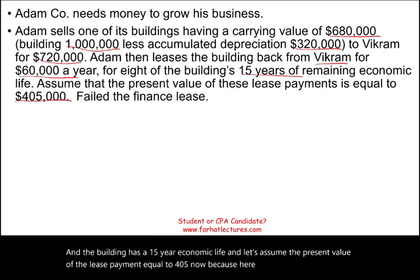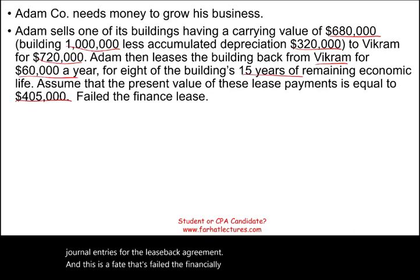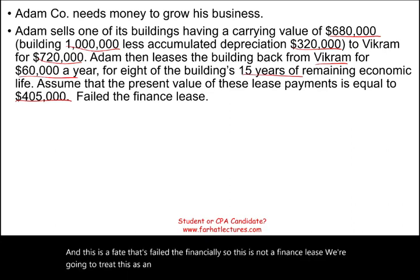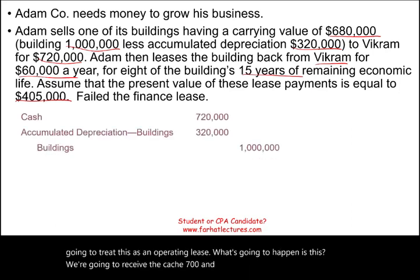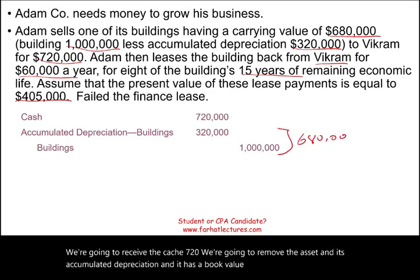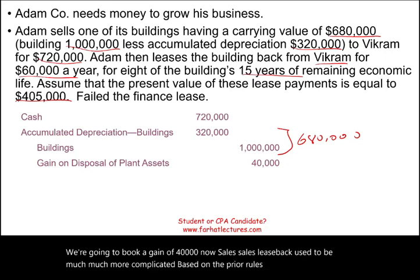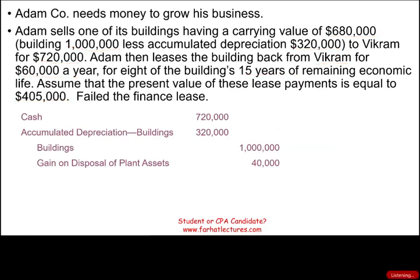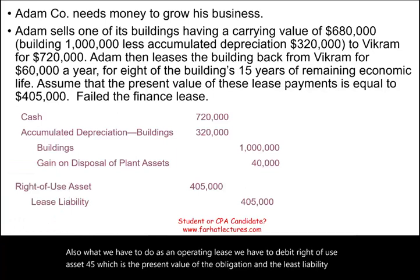Here we are focusing on the journal entries for the leaseback agreement, and this failed the finance lease test, so we treat this as an operating lease. Adam receives cash of $720,000, removes the asset and its accumulated depreciation — book value is $680,000 — and books a gain of $40,000. As an operating lease, we also debit right-of-use asset $405,000 and credit lease liability $405,000, which is the present value of the obligation.